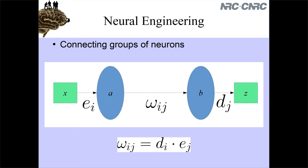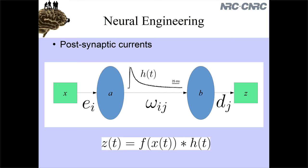That's how we're going to build up larger models and have those models - the internals of those models - still be biologically realistic. That will let us build a model where each step computes a function, computes a function, and computes a function, and we can map everything down onto biology.